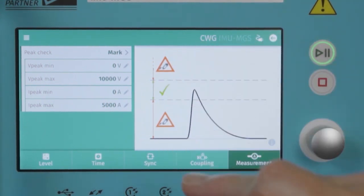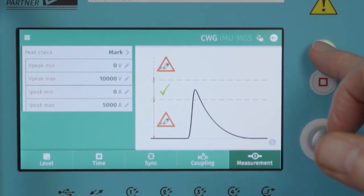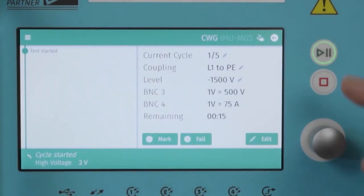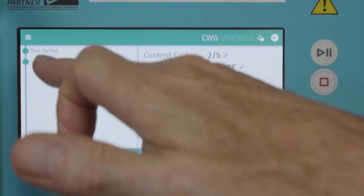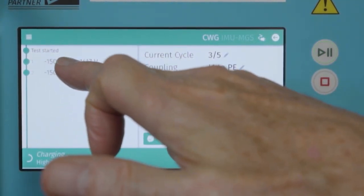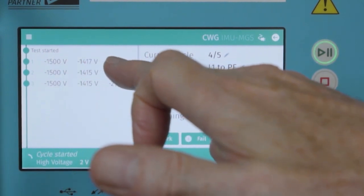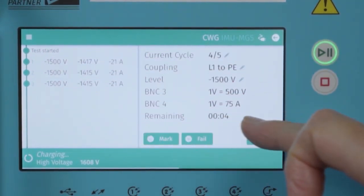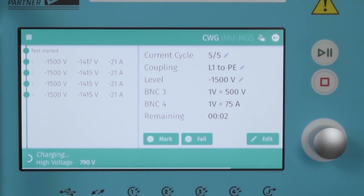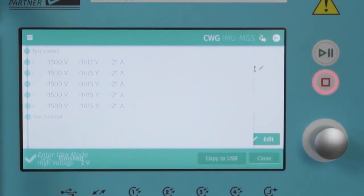When all parameters are entered, we can start a test. The display changes to show a test report. We see each of the impulses, the voltage, the current and all of the parameters that we programmed on the right-hand side.